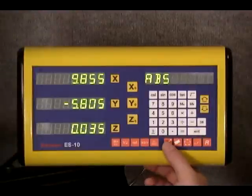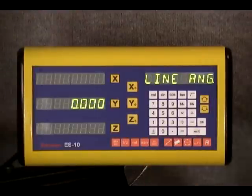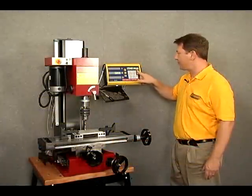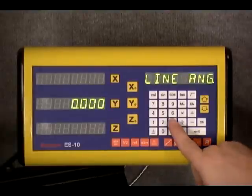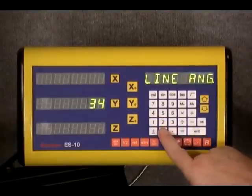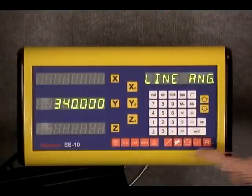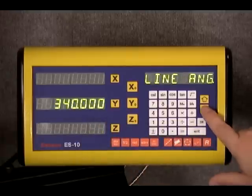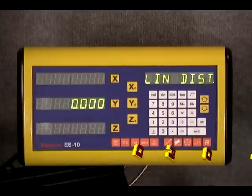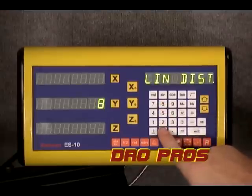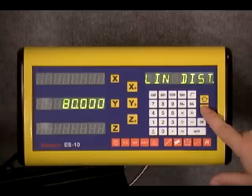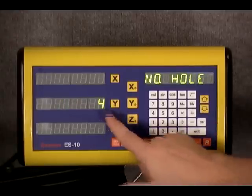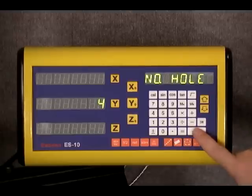The first thing we need to do is simply push the line hole function button and it prompts us for a line angle. Let's go ahead and put in 340 degrees. We enter that. It's accepted that entry. We'll arrow down once. Our line distance today we're going to work with 80 millimeters, so push 80 and enter. We'll arrow down for the next function. The number of holes will be 4 today, so I can go ahead and enter that.